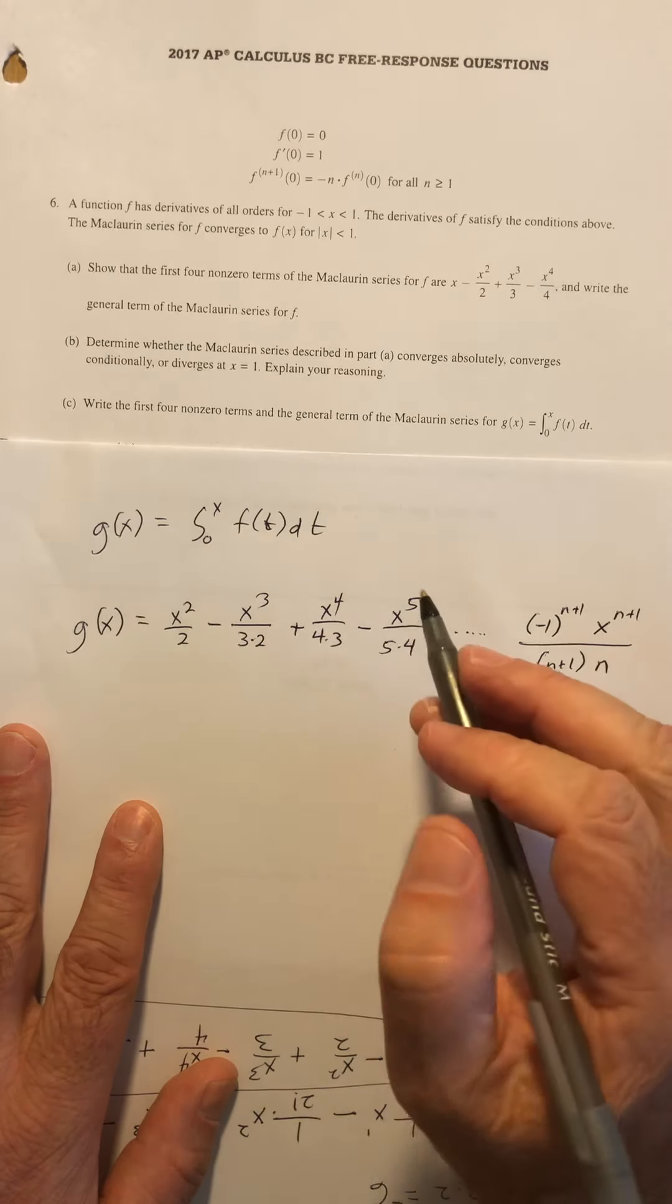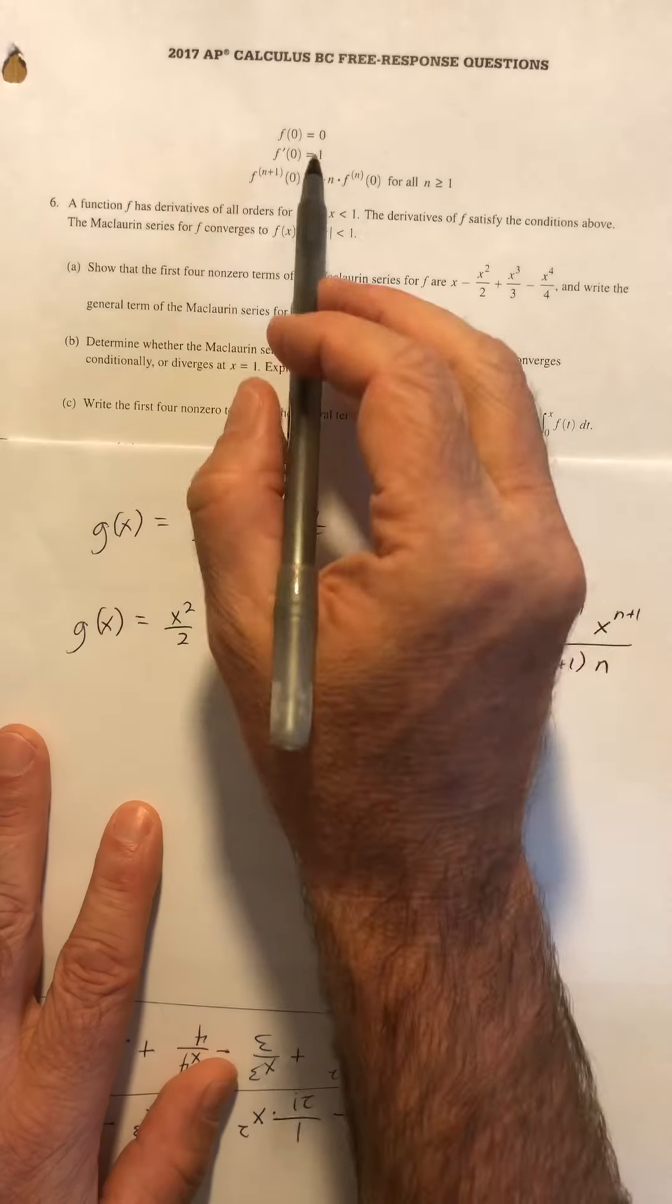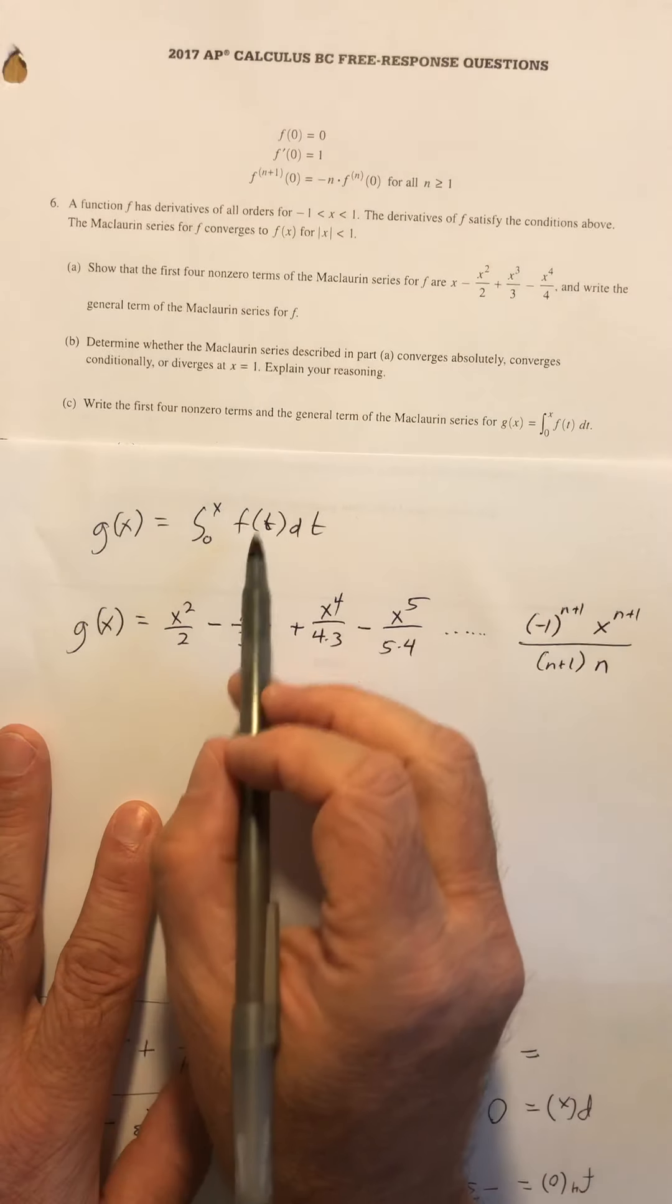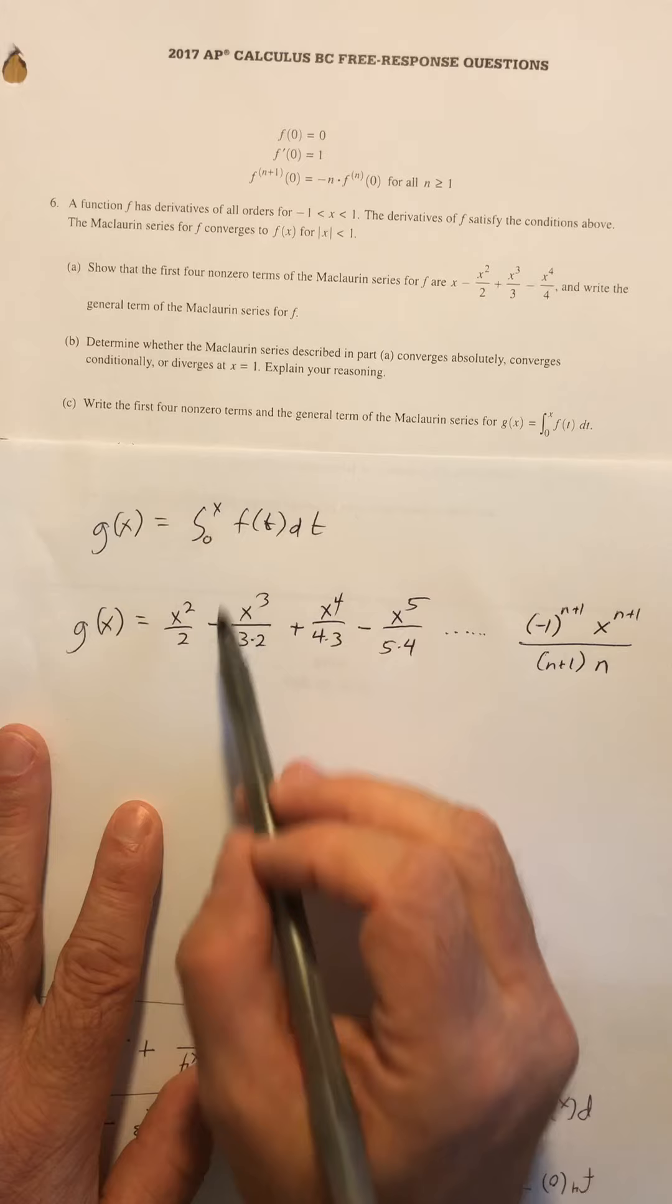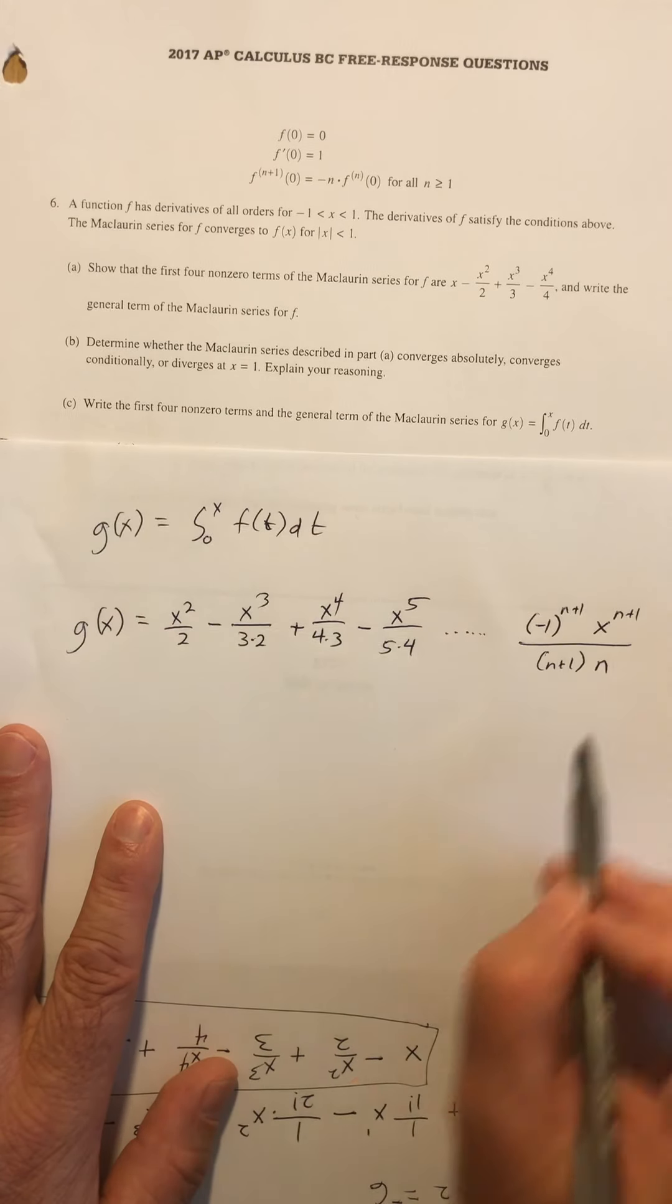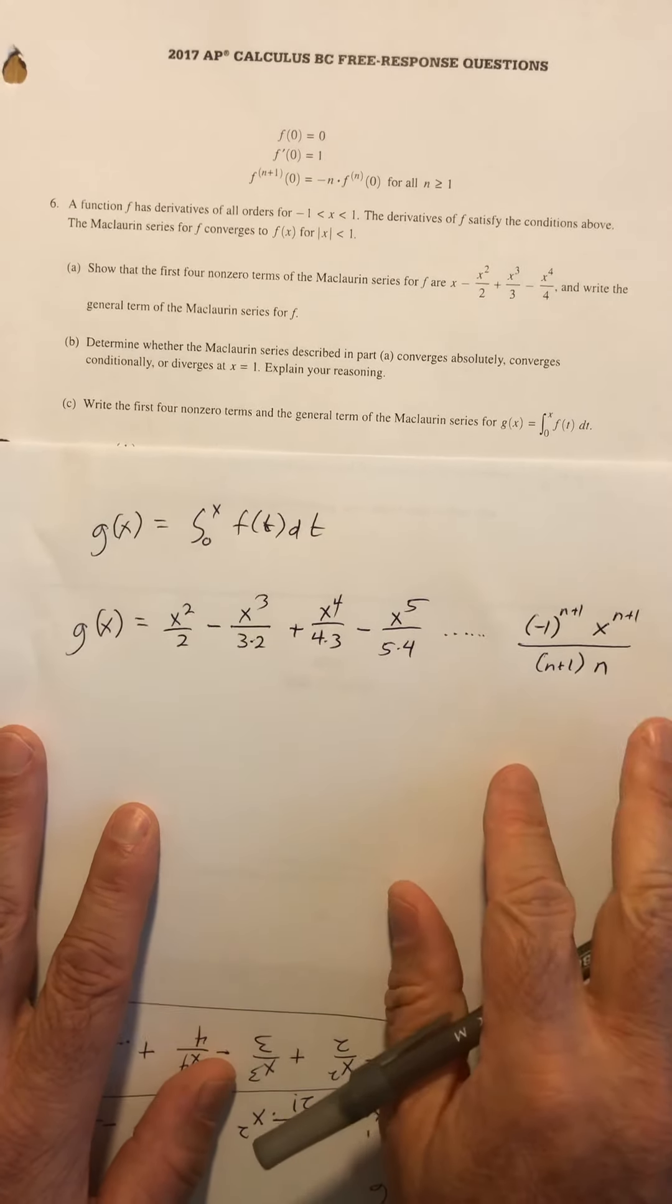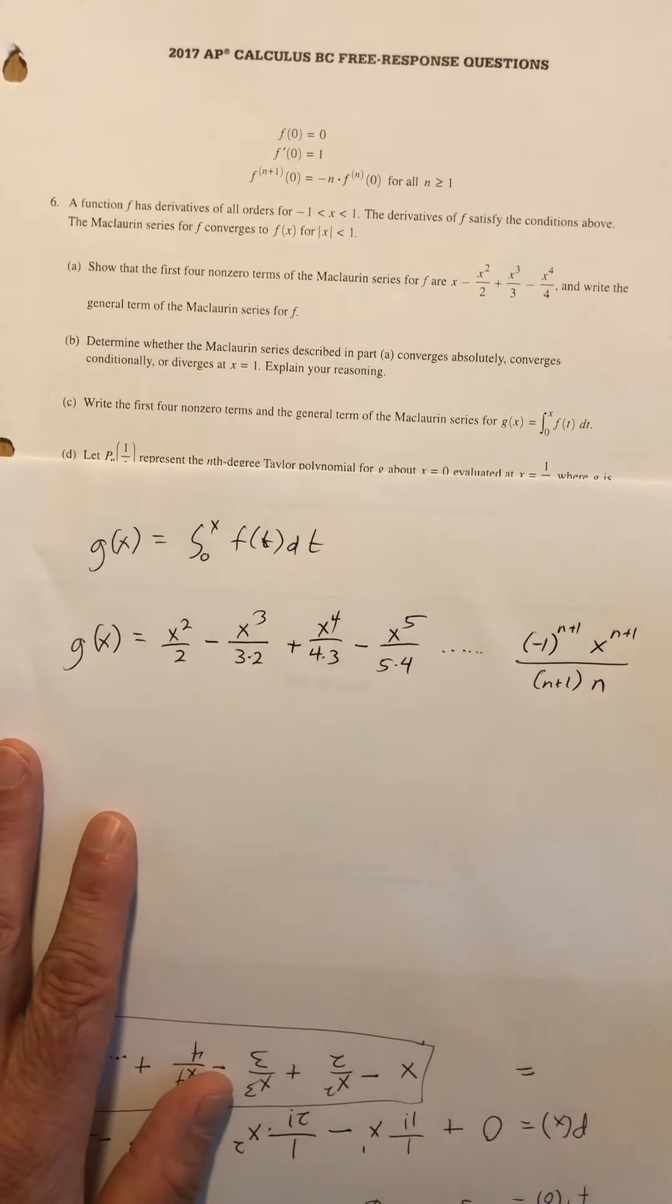I should also subtract F of zero, right? But F of zero is zero, right? So I'm plugging in x, finding the antiderivative, plugging in zero. So you can put a minus zero there if you want, but that's it. So that's our answer to part C.